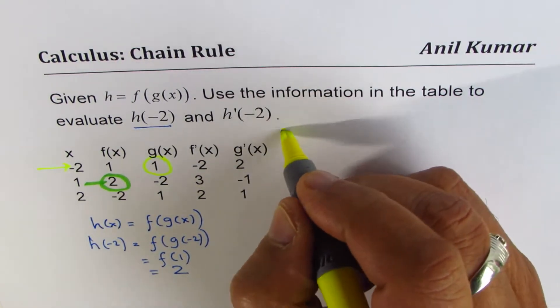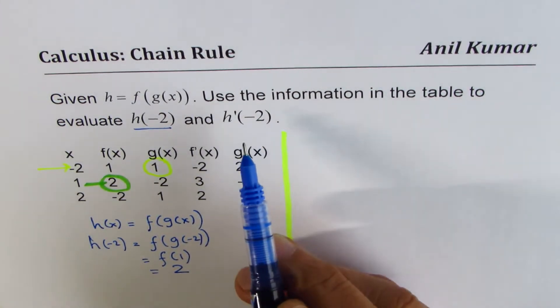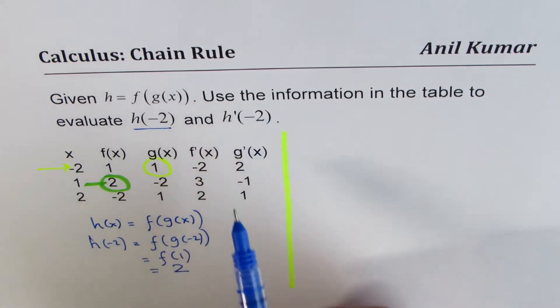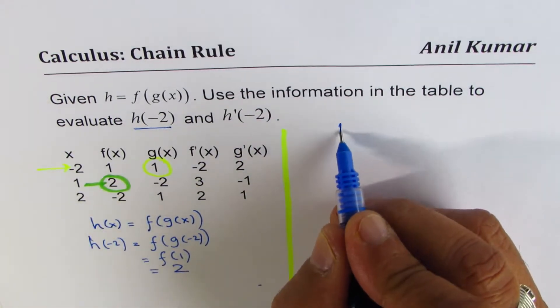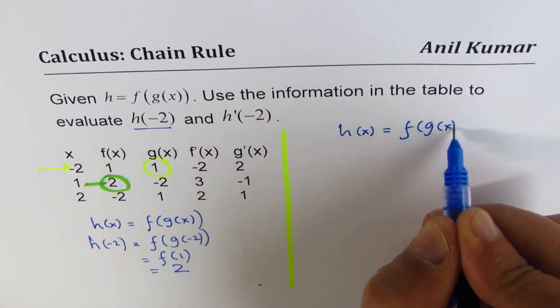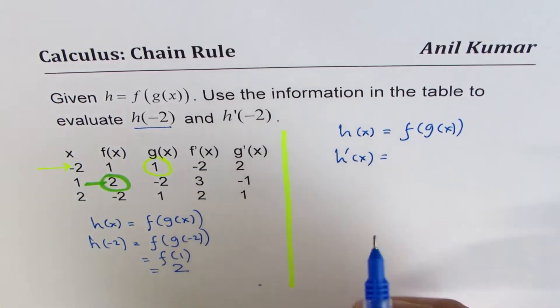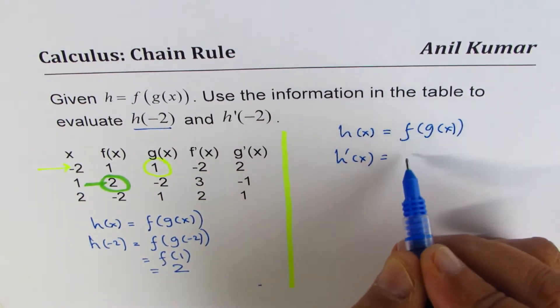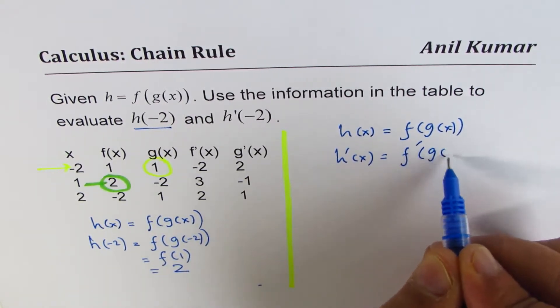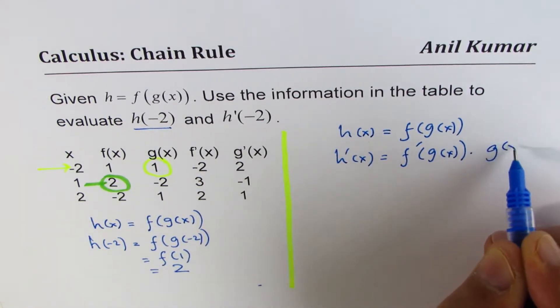Now, let's try to find out the derivative of the function and then find the derivative of the function h of x at minus 2. We have given h of x as equals to f of g of x. Applying the chain rule, we can find its derivative as derivative of outside function, which is f prime of g of x times derivative of inside function.